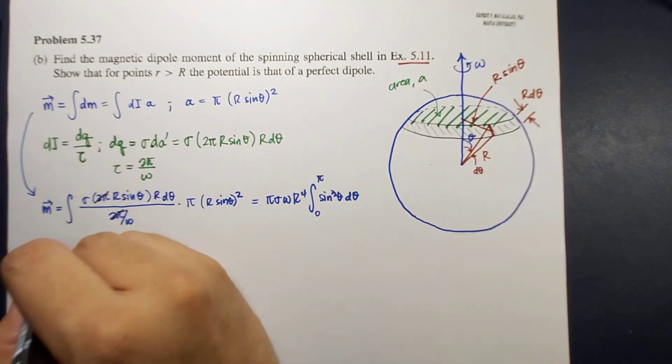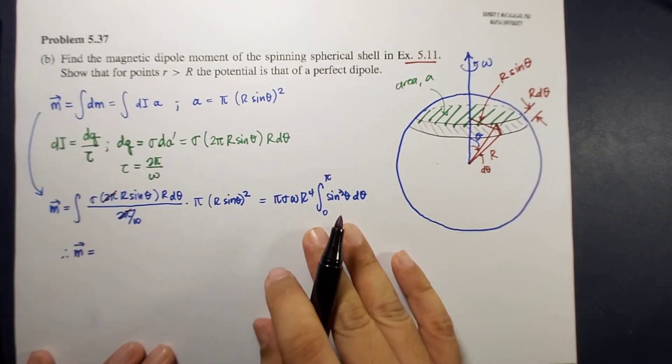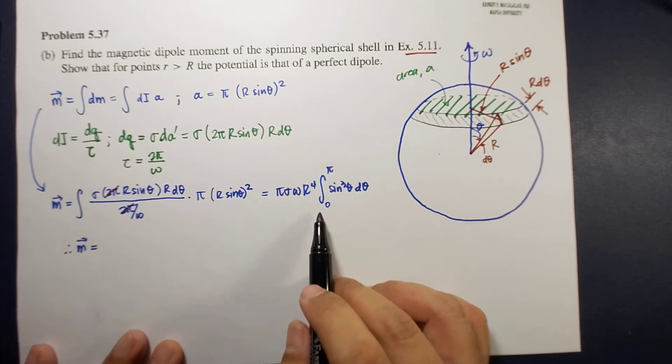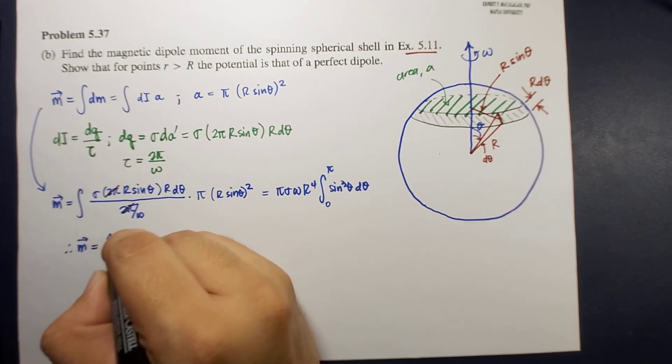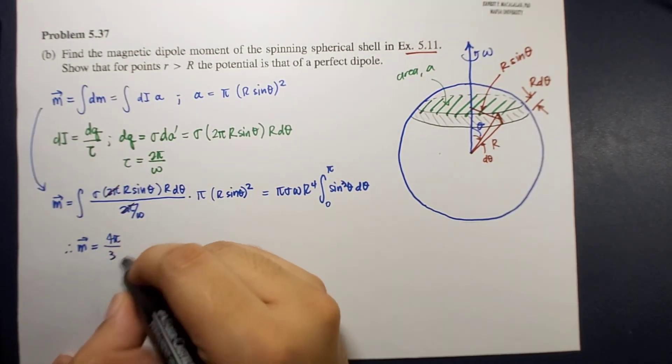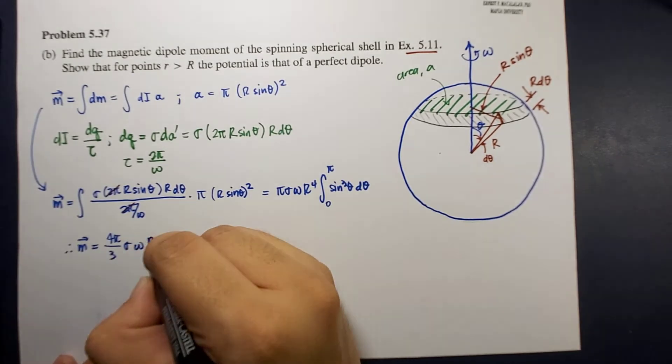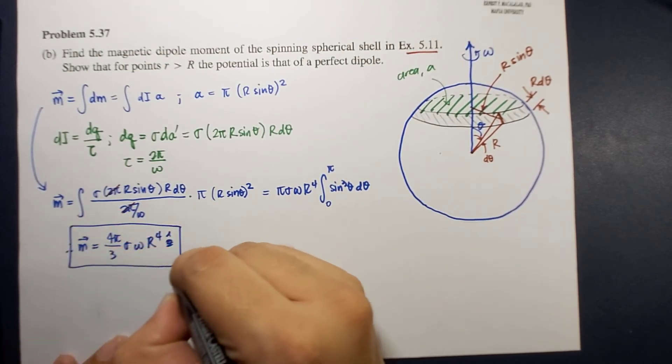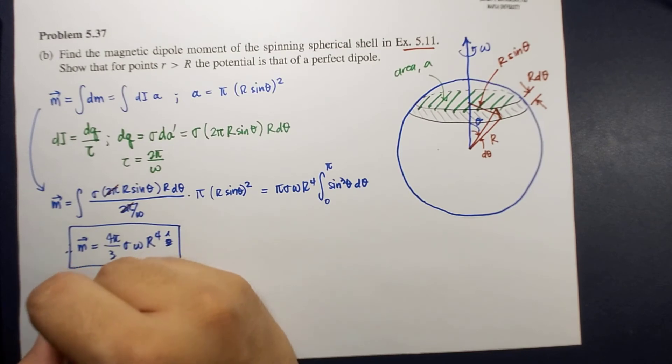Therefore, the magnetic dipole moment will now be equal to, this can be evaluated later at your own time, and the answer is 4π over 3 times sigma omega r to the fourth z-hat. So this is your dipole moment.